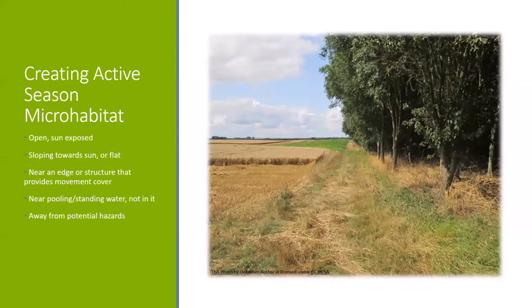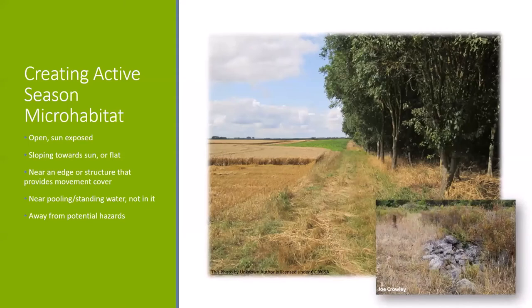Once snakes have come out of hibernation, they move into active season habitat. Microhabitats include specialized habitats like nesting and gestation, which share some common features. Generally, if there's a field with sparse vegetation and no rocks or logs, snakes will benefit from more structure, especially near sun-exposed edges. Place structures in areas with suitable habitat known to be occupied by the target species — open, sun-exposed areas for most of the day. Structures should slope toward the sun or be on flat ground, and be placed near an edge or tall grasses that allow snakes to reach the habitat without being seen by predators. They should be away from roads, laneways, predator corridors, flooding, and vandals.